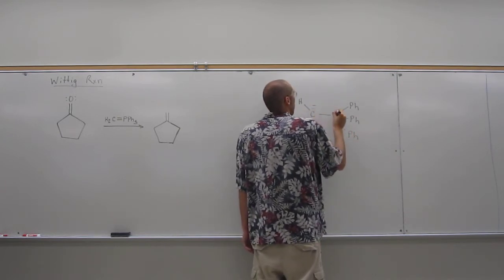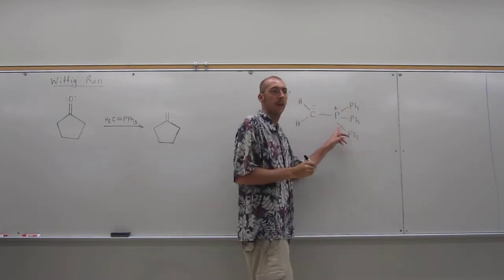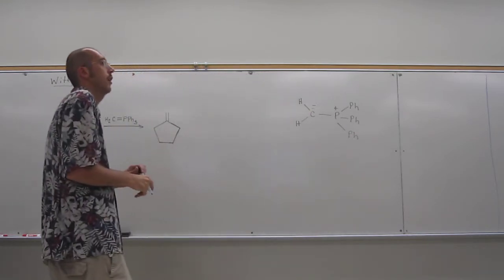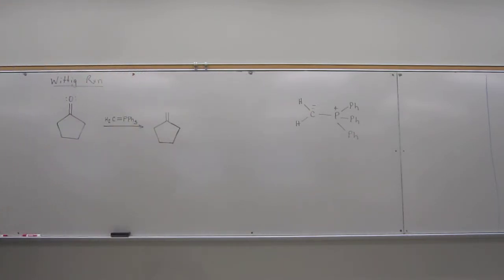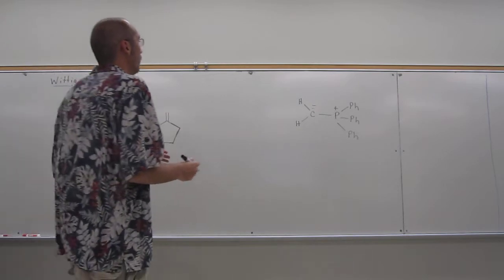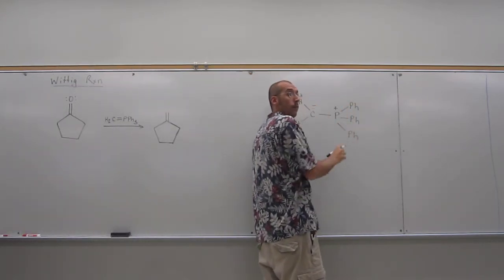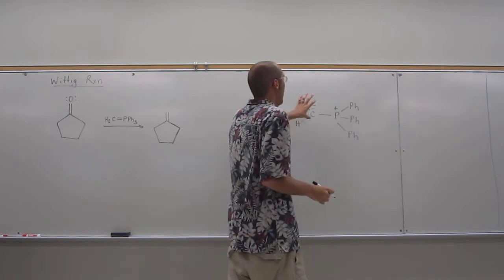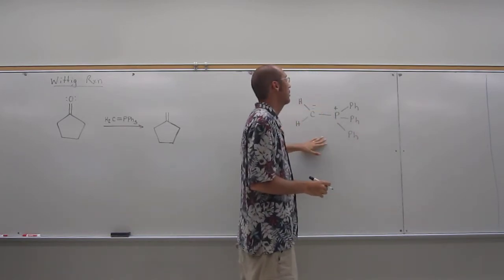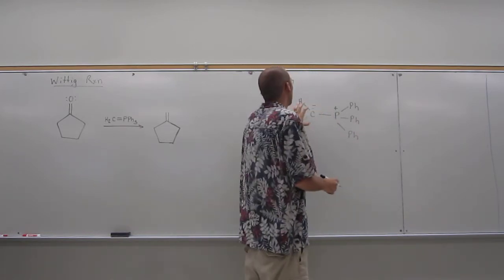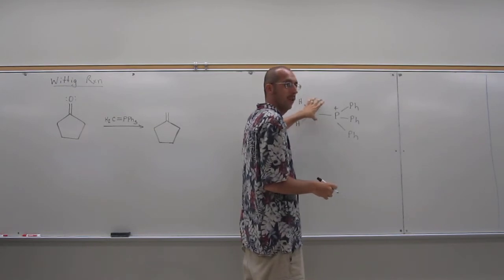Where you've got the negative charge on the carbon and the positive charge on the phosphorus. Why? Because you don't have very good pi overlap because the phosphorus is very big, carbon is very small. That gives a lot of negative character. This is just one resonance structure, of course.